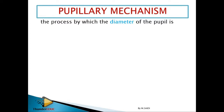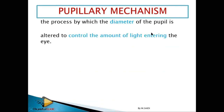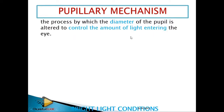How much light is entering the eye? That is what you call pupillary mechanism — the process by which the diameter of the pupil is altered to control the amount of light entering the eye. The light can be adjusted depending on whether conditions are bright or dim.